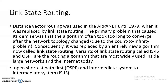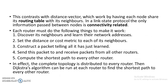Variants of Link-State Routing are called ISIS and OSPF. These routing algorithms are most widely used inside large networks and the internet today. OSPF stands for Open Shortest Path First and ISIS stands for Intermediate System to Intermediate System. This contrasts with Distance Vector, which works by having each node share its routing table with its neighbors. In Link-State protocol, the only information passed between nodes is connectivity related.